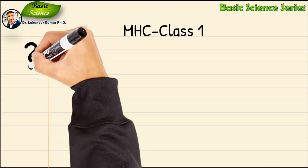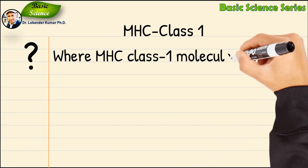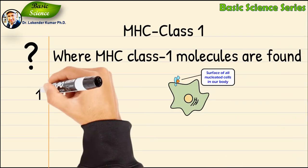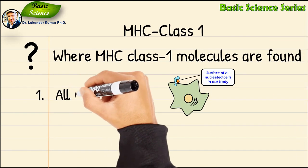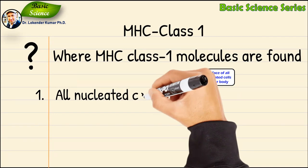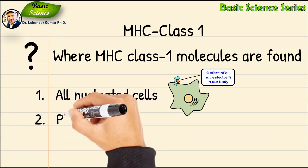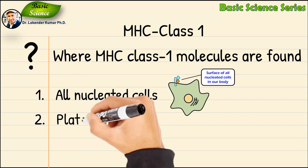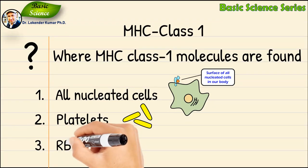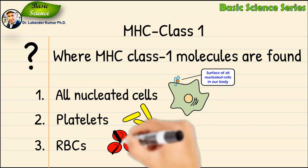The first question is where MHC class 1 molecules are found. They are present in almost all the cells of our body — on the cell surface of all nucleated cells. It is very important to note that they are present on platelets but not on the red blood cells.